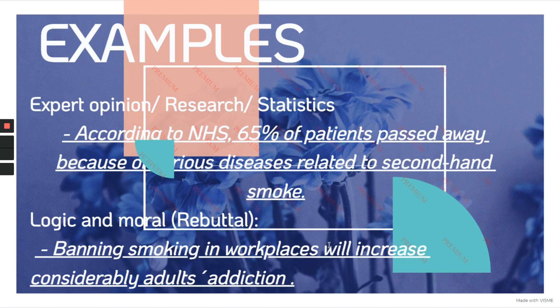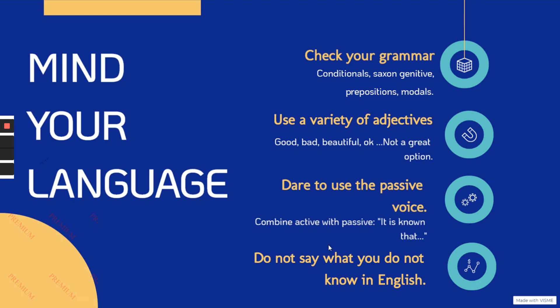On account of rebuttal: 'Banning smoking in workplaces will increase considerably adult addiction' — it's a pretty straightforward idea, which is also pretty solid when it comes to reframing somebody's arguments. How does the speaker take a side? Mind your language — it is very important. When we want to argue, we need to check our grammar. Conditionals, the subjunctive, prepositions and modals are some of the highlights and grammar points you should consider when starting a debate.